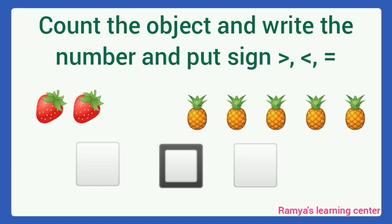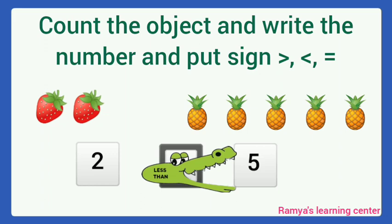Here, how many strawberries are here? 1, 2. Next, how many pineapples are here? 1, 2, 3, 4, 5. Here, alligator opens mouth towards number 5. We put the symbol the same way. That is, less than. 2 is less than 5.